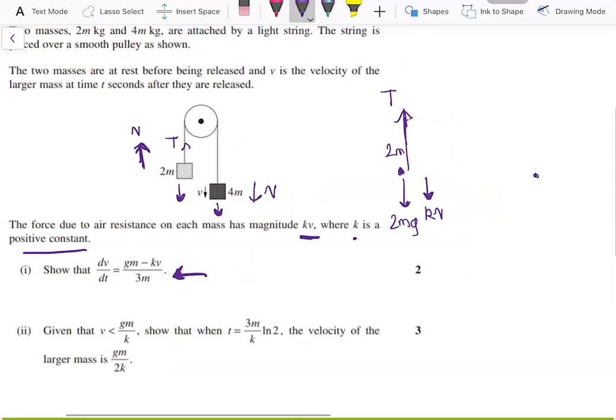And for the 4m mass, we'll have an upward tension force which is also T because the tension throughout the string is the same. And we have a downward weight force of 4mg. And since the 4m mass is moving downwards, the air resistance will be a force of kv upwards.